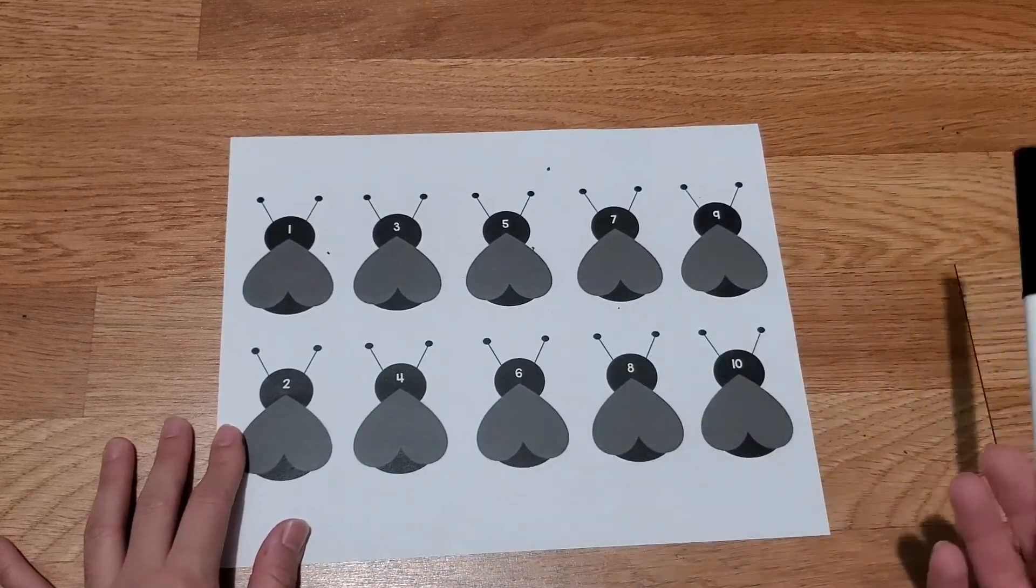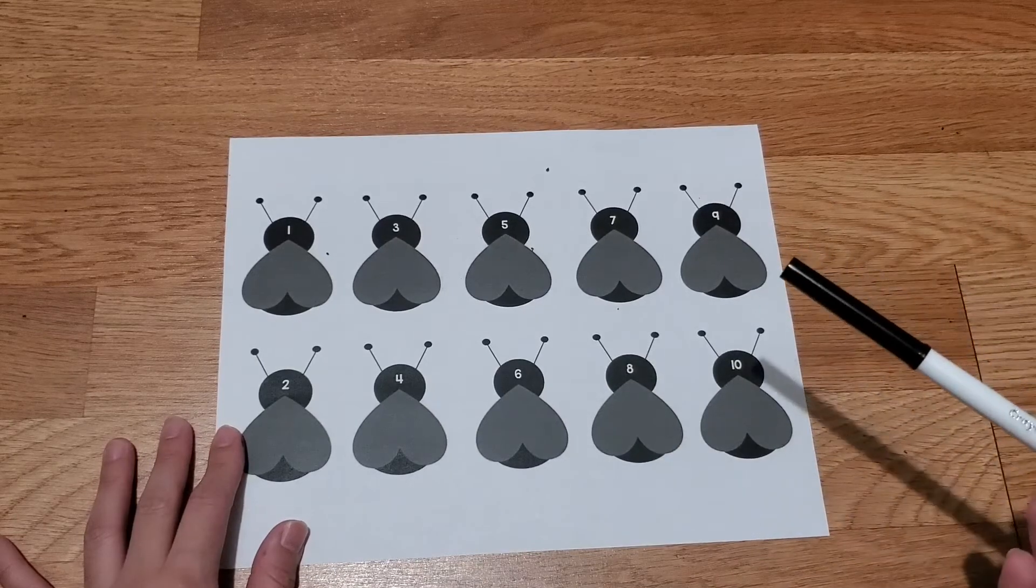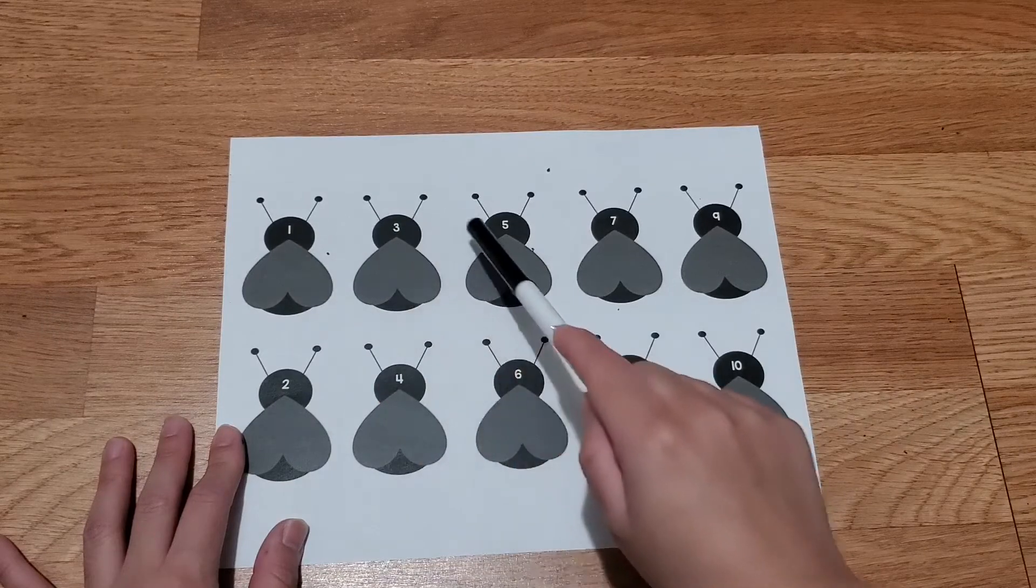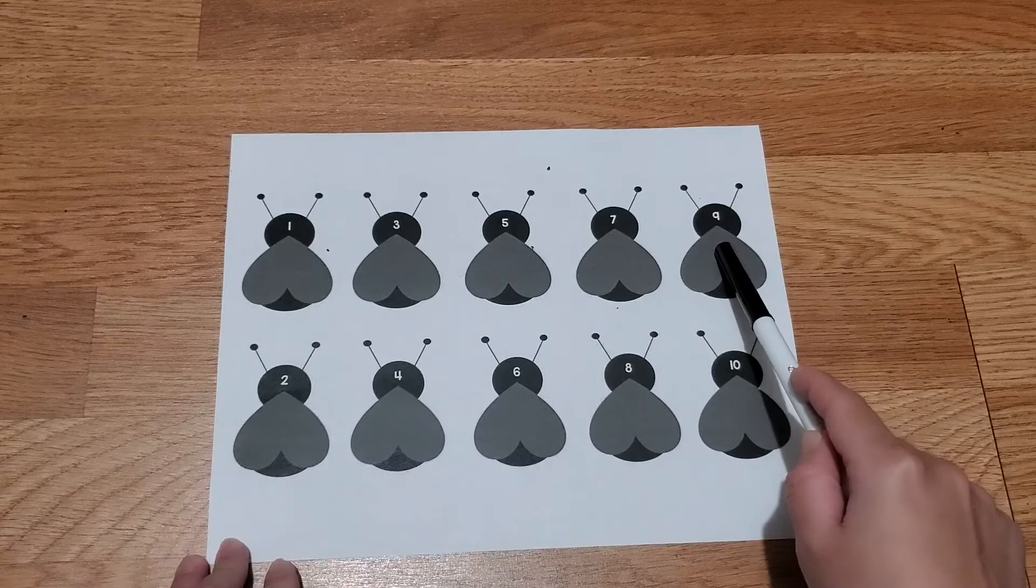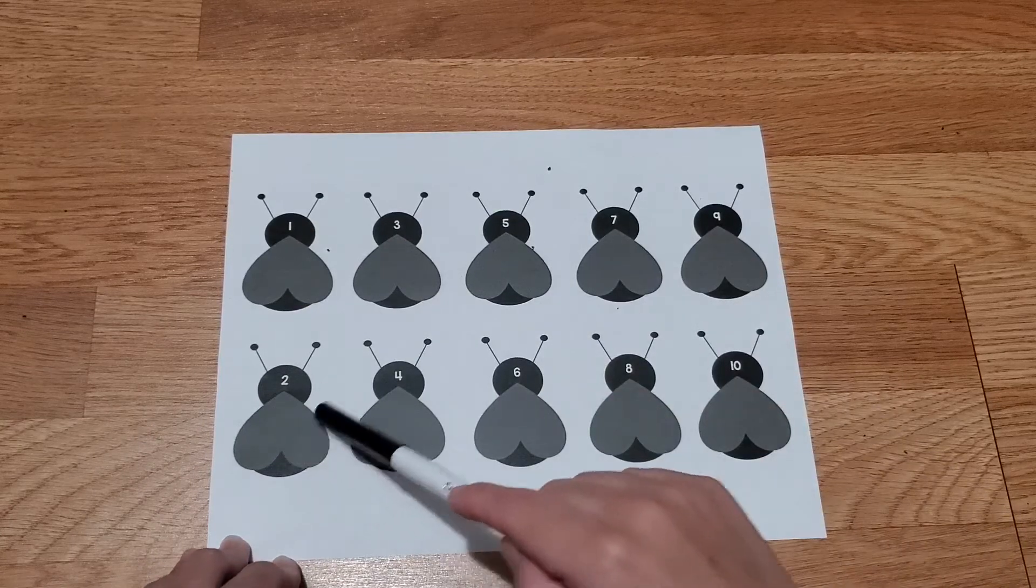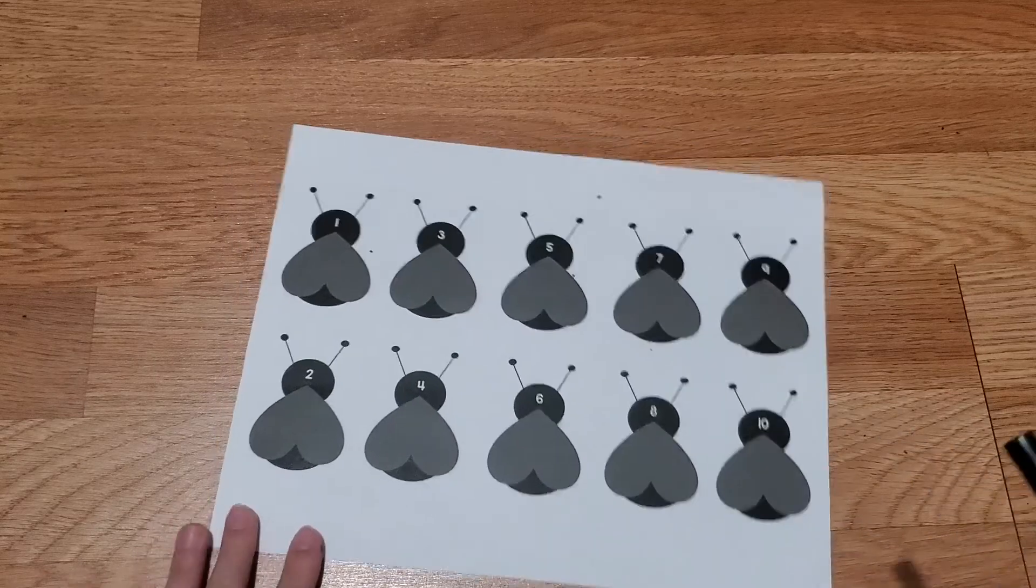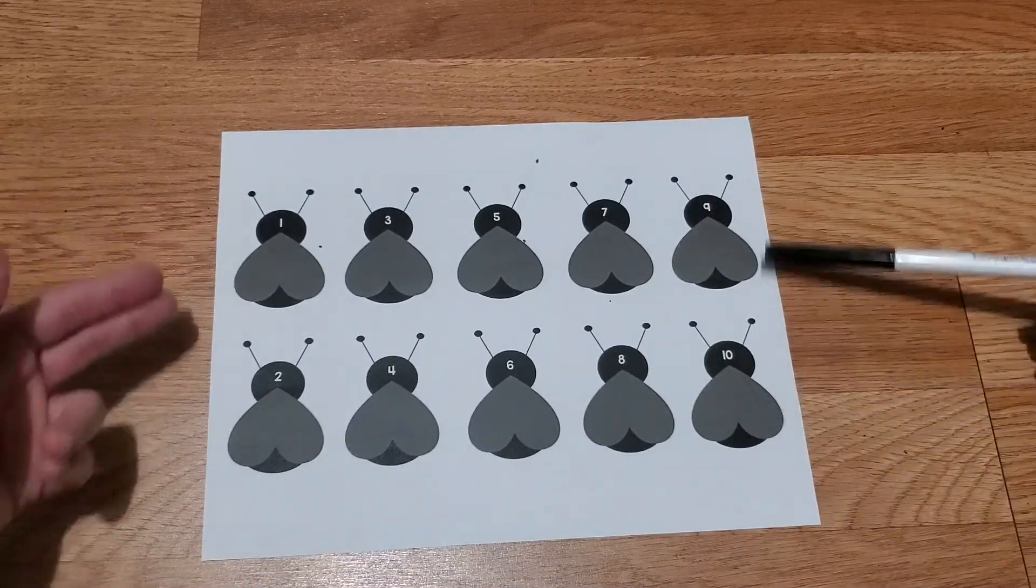If you remember a few weeks ago, we learned something about numbers and there are different forms of numbers. We have one, three, five, seven, and nine, and on the bottom we have two, four, six, eight, ten. Who can tell me what the difference are for each row?